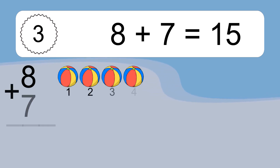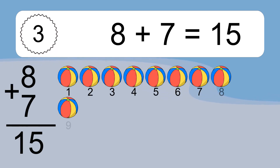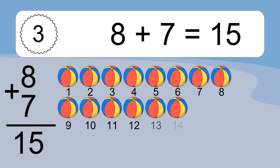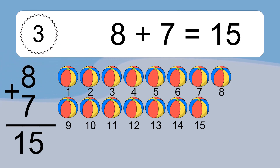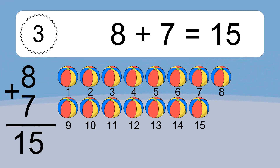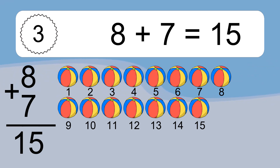8 plus 7 equals 15. Let's count it. 1, 2, 3, 4, 5, 6, 7, 8, 9, 10, 11, 12, 13, 14, 15.